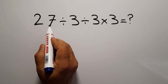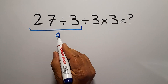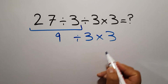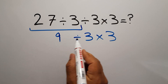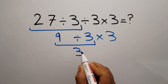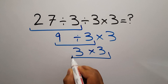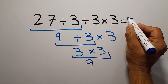So 27 divided by 3 gives us 9. So we have 9 divided by 3, then times 3. We have to do this division first: 9 divided by 3 equals 3. And 3 times 3 is equal to 9. So our final answer to this problem is 9. The correct answer is 9.